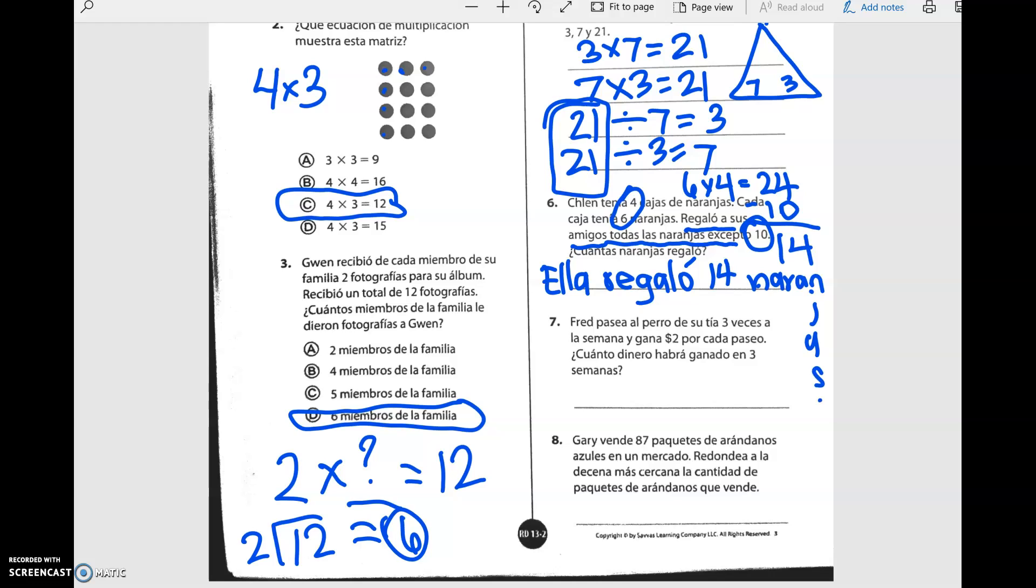Fred pasea el perro de su tía tres veces a la semana y gana dos dólares por cada paseo. ¿Cuánto dinero habrá ganado en tres semanas? There are two steps here. Primero, él pase el perro tres veces por dos dólares. Así que tres por dos dólares es igual a seis dólares. Pero, él va a hacerlo por tres semanas. He's going to earn that six dollars for three weeks. So six plus six plus six, o seis por tres es igual a dieciocho dólares.